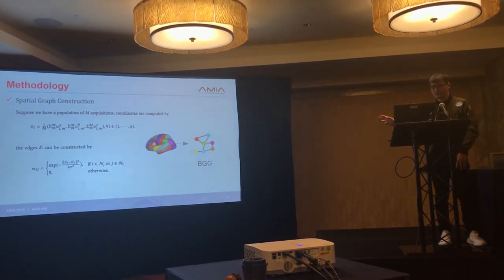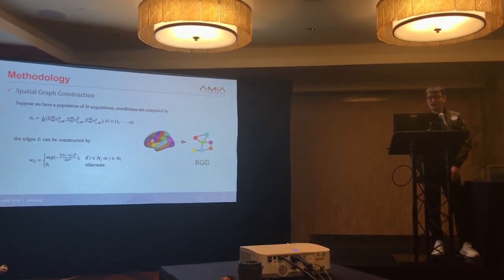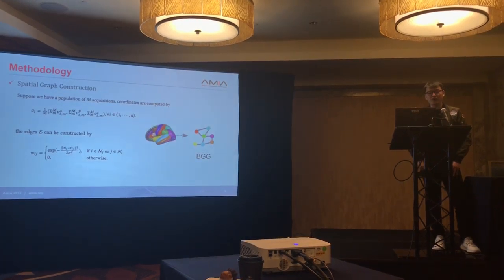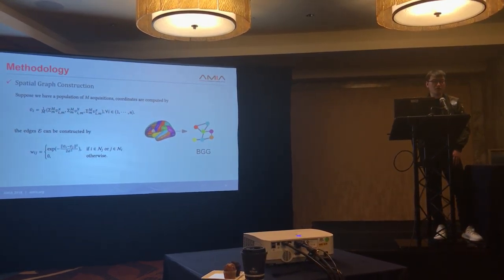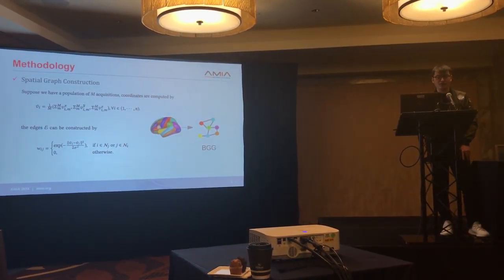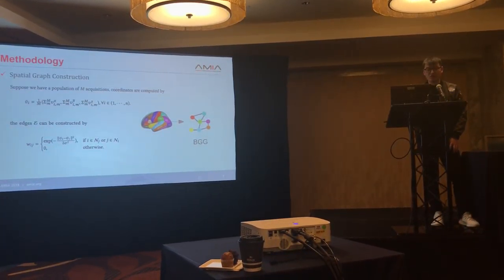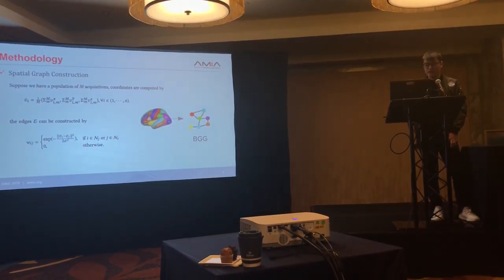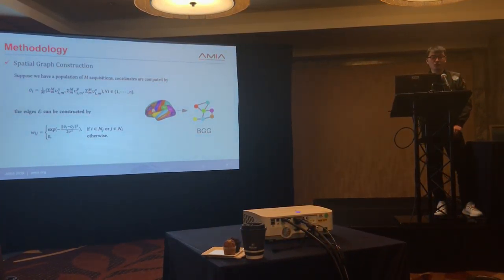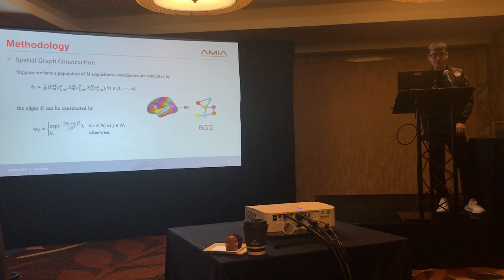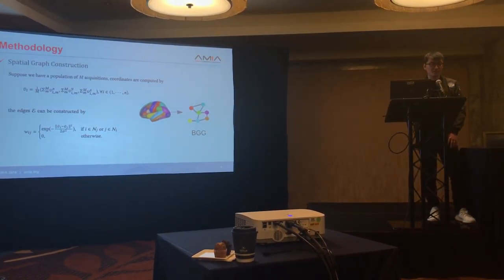This is the detailed implementation of the graph construction for the BGG. Given a collection of M acquisitions, the coordinates of each region of interest are computed as the average coordinates of that specific ROI across all acquisitions. The edge weights between pairwise ROIs are constructed using Gaussian-weighted Euclidean distances. The assumption is that the closer the distance, the larger the weight.